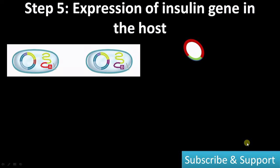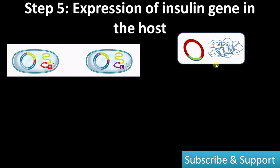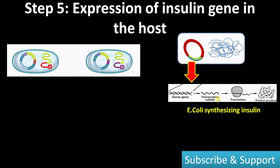Step five: expression of insulin gene in the host. The protein is expressed inside the host as a fusion protein. The beta-galactosidase gene is fused to the A insulin gene in one culture and to the B chain of insulin in the second — this is called the fusion protein. Inside the host it undergoes transcription followed by translation, finally forming the protein product. Transcription and translation can be induced by adding the substrate of beta-galactosidase, which is lactose, ensuring efficient translation.